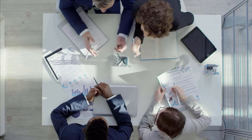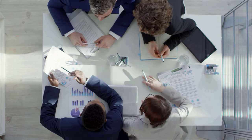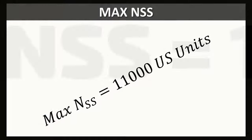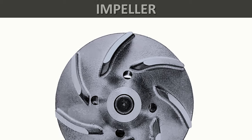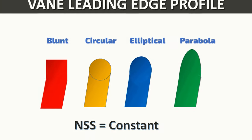Tip number four: talk to pump manufacturers and get the best pump design to meet your lower inlet pressure requirements. Suction performance and operating window used to be inversely proportional to each other. Suction specific speed — an indicator of impeller design — greatly affects suction performance. Increasing this value yielded less inlet pressure requirements at BEP but came at the cost of a reduced operating window, hence 11,000 US units used to be the upper limit for suction specific speed. However, for the past few decades, computational fluid dynamics and other design improvements have provided tools for pump engineers to design pumps with the best possible suction performance without compromising the operating window.